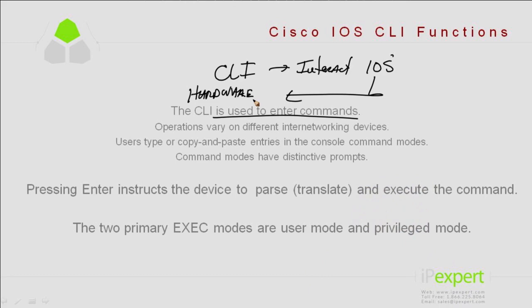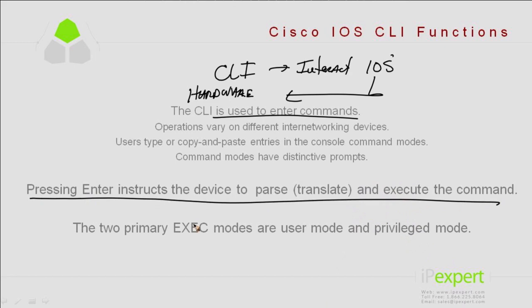It's also important to understand that the CLI allows us access to specific features and commands. We have two primary executive modes where we'll use this. What are the executive modes, how are they designated in the system, and what is the difference between user mode and privileged mode?